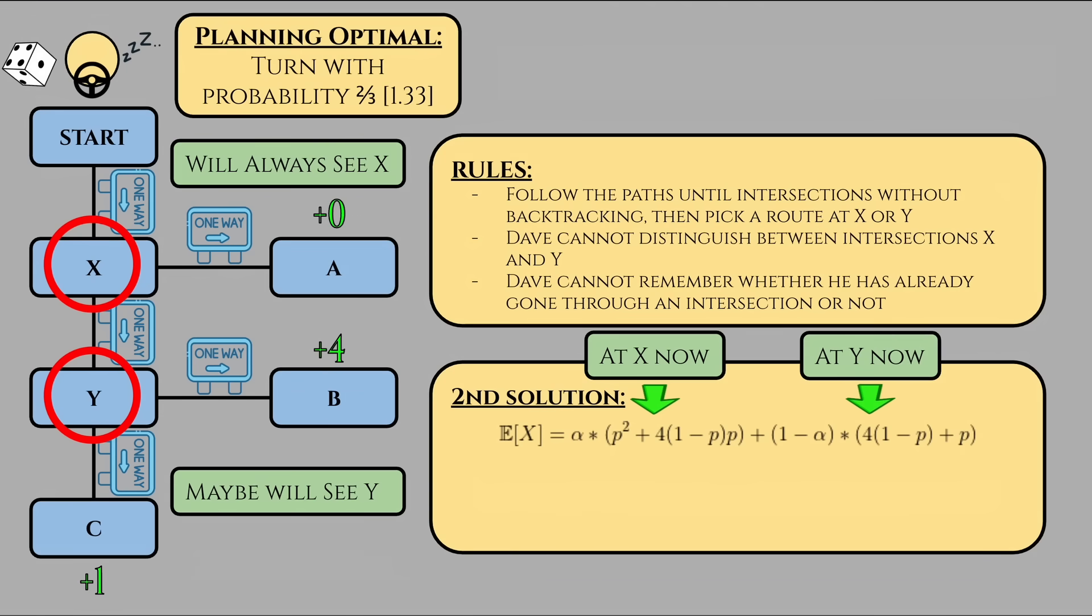Note that in the last expression, 4 times 1 minus P plus 1 times P has a different probability weighting, since that is the case where we're considering the possibility that we're not at intersection X, i.e. we're at intersection Y. This process is known as being action optimal, as opposed to our previous case of being planning optimal.